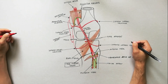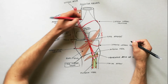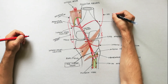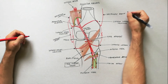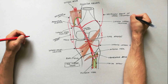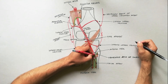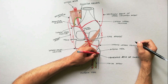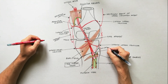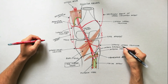The superior lateral genicular artery anastomoses with the inferior lateral genicular artery and the descending branch of the lateral circumflex femoral artery. The inferior lateral genicular artery anastomoses with the superior lateral genicular artery and with numerous branches such as the anterior and posterior recurrent branches of the anterior tibial artery and the circumflex fibular branch of the posterior tibial artery.